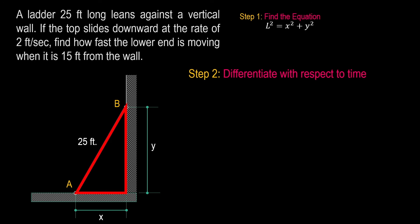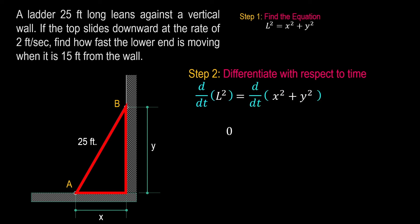Step number two is to differentiate with respect to time. This is where the actual differentiation happens. We take the equation from step one and differentiate it with respect to time. Differentiating both sides, we get zero on the left — because L squared is constant and the derivative of a constant is zero — equal to 2X times dx/dt plus 2Y times dy/dt. That completes step number two.